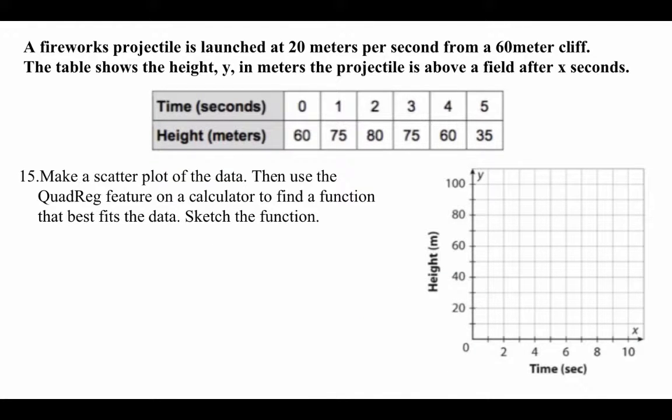A fireworks projectile is launched from a cliff, and there's a table of values. If you plot those points in, that's the projectile of a fireworks. It's coming down and looks like it's going to hit about 6, but we're not sure. It definitely looks like a parabola.